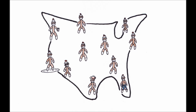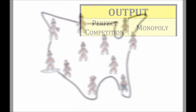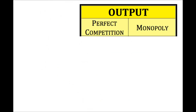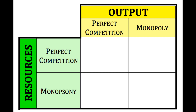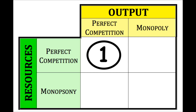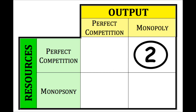If we look at two possible product or output market structures — perfect competition and monopoly — and two possible resource market structures — perfect competition and monopsony — then that gives us a total of four scenarios to examine. One: a perfectly competitive output market and a perfectly competitive resource market. Two: a monopoly output market with perfect competition in the resource market.